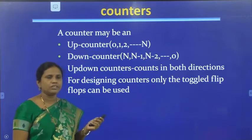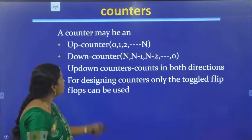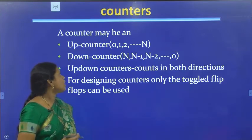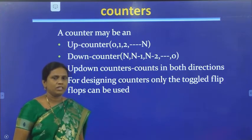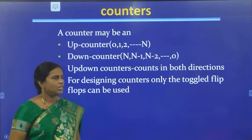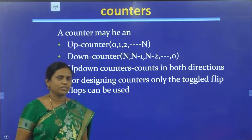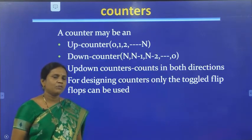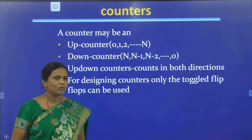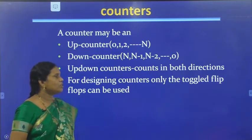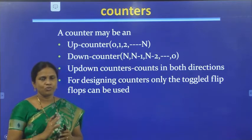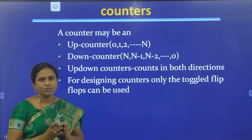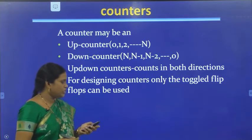A counter may be an up counter, down counter, or up-down counter — and this applies to both asynchronous and synchronous types. An up counter counts values from 0 to N, a down counter counts from N to 0, and an up-down counter counts in both directions. For constructing counters we must use only toggle flip-flops, that is JK or T flip-flops.